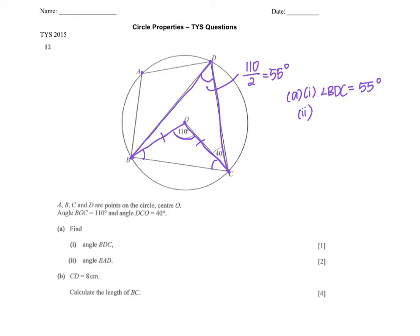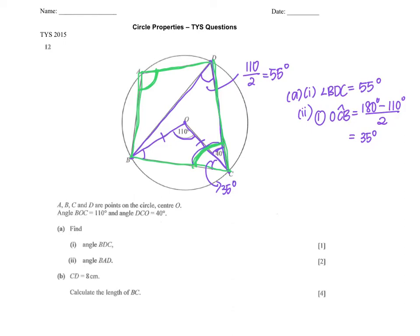Part 2: find angle BAD. BAD is down here, and we have a cyclic quadrilateral, so angles in opposite segments add up to 180. I know angle DOC is 40 degrees. Angle OCB from the isosceles triangle is 180 minus 110, divided by 2 — that gives 70 divided by 2, which is 35 degrees. So the whole angle is 35 plus 40. Using angles in opposite segment, angle BAD = 180 minus 35 minus 40, giving 105 degrees.